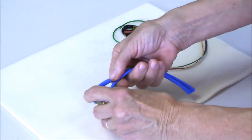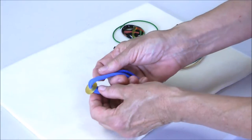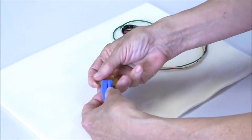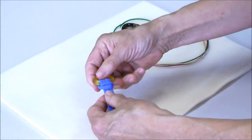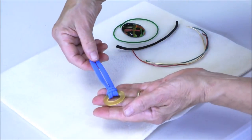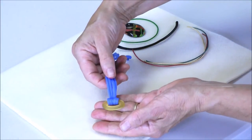I will put the loop from the front to the back through whatever component I'm going to link it into, and then I am going to push the tails through the loop, pull them tight and I have a lark's head knot. This is what it looks like from the back.